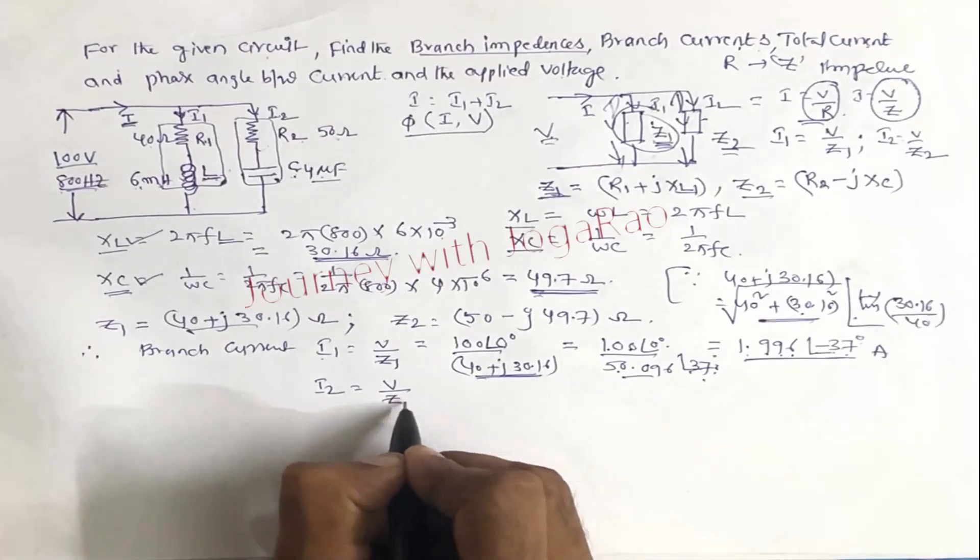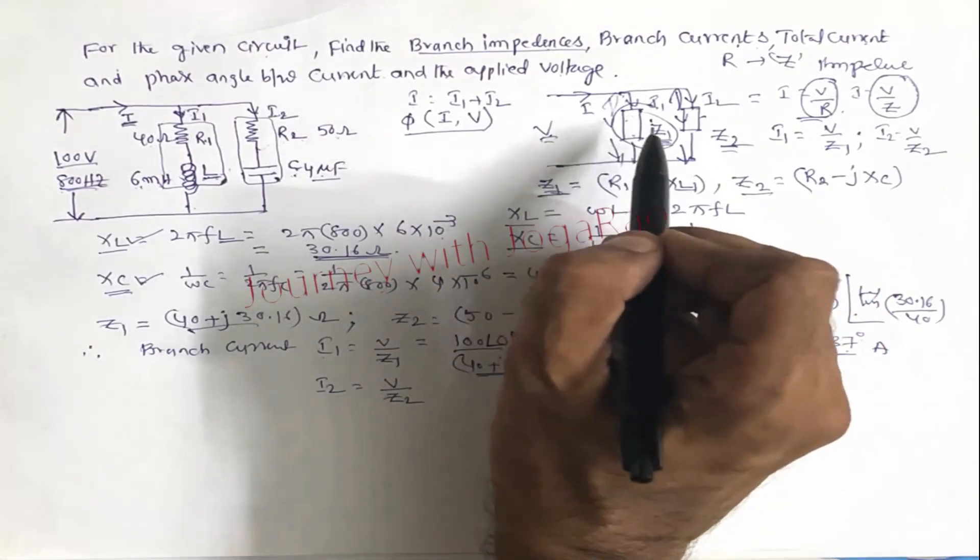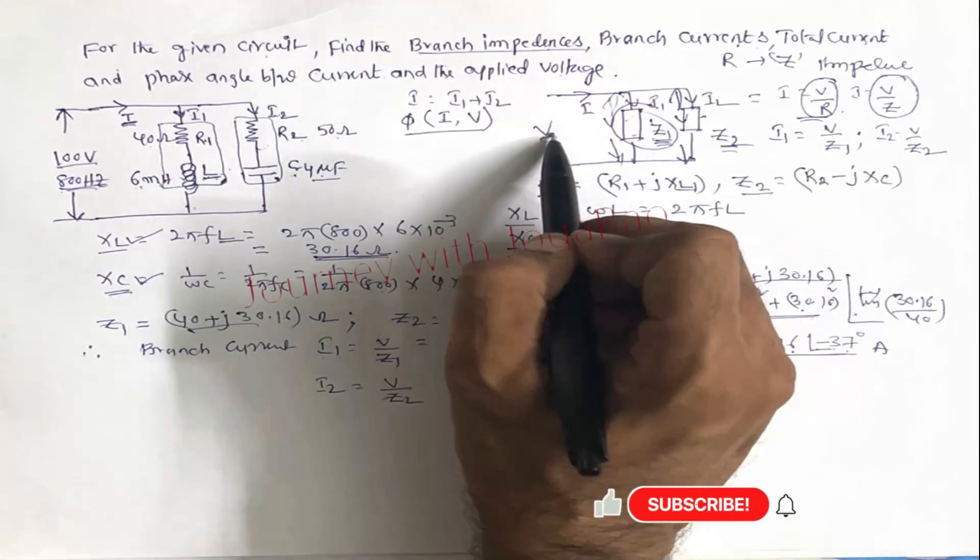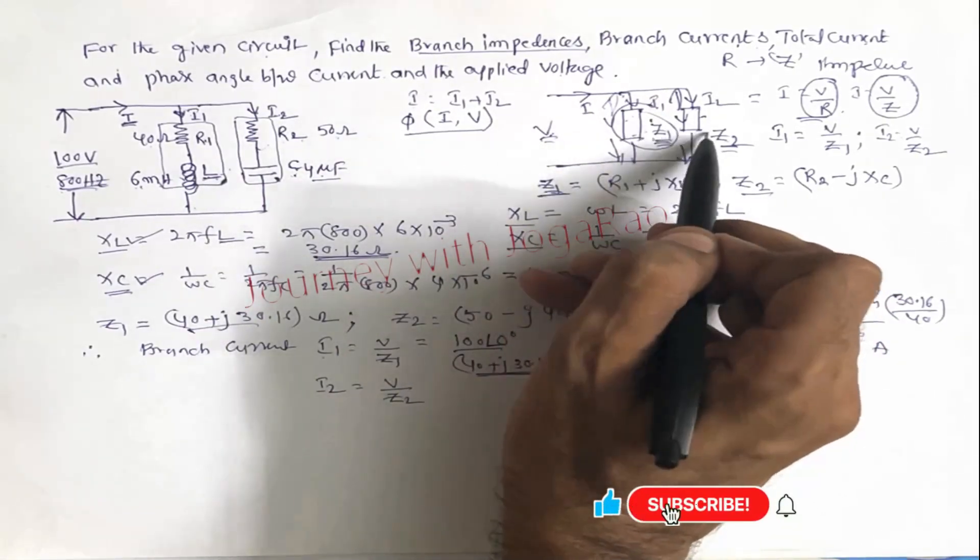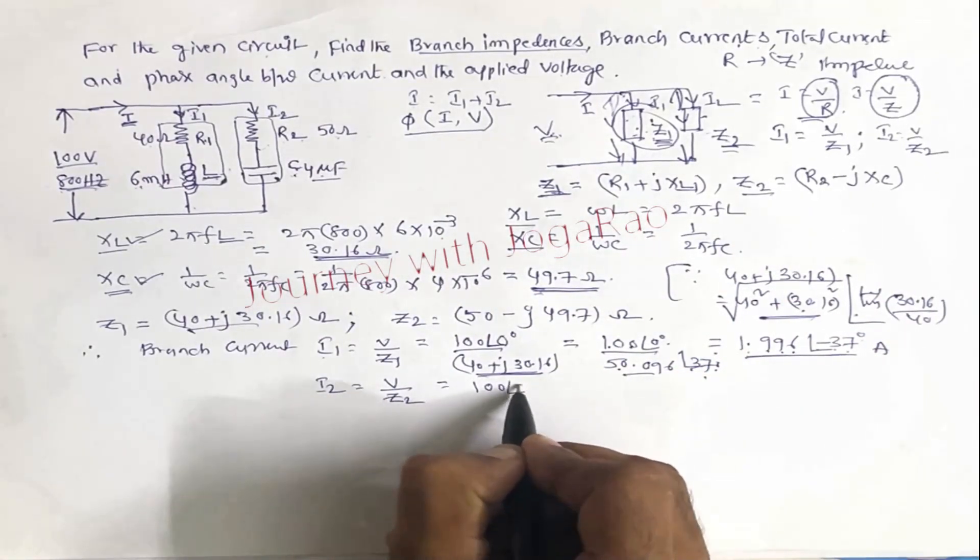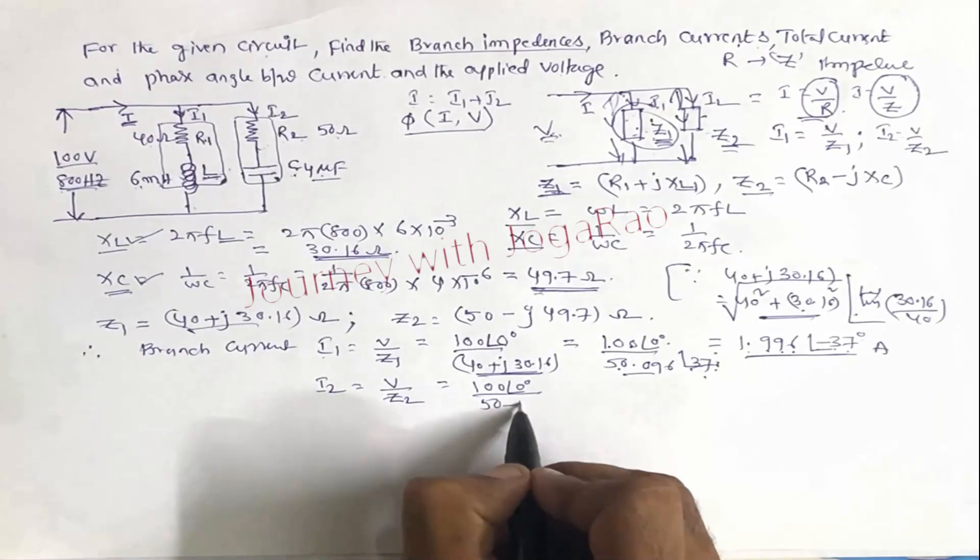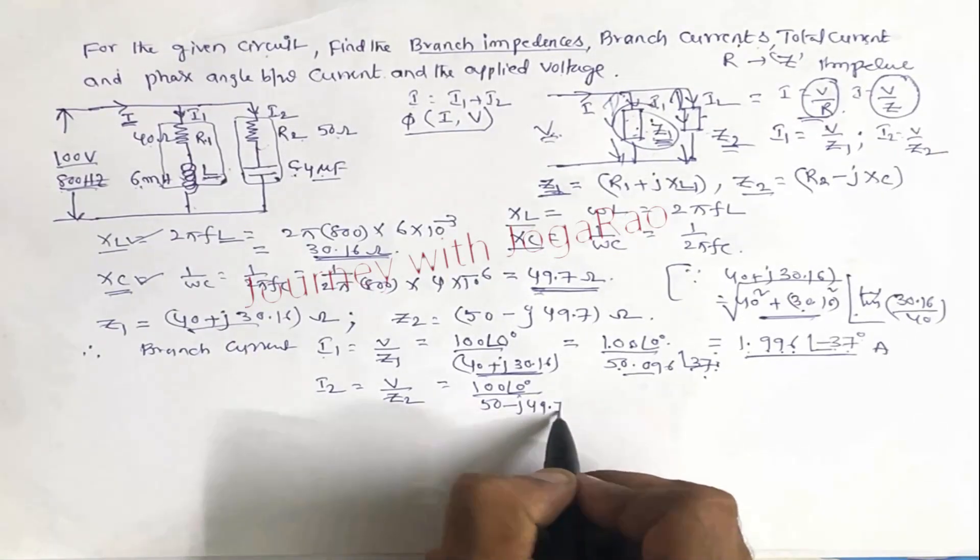And similarly branch current i2 is equal to V by Z2. Voltage is same, parallel, same voltage in branch 1 and branch 2. All are connected in parallel. 100 at an angle 0 degrees by Z2 value 50 minus j 49.7.